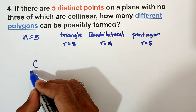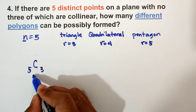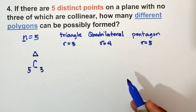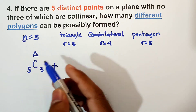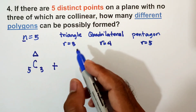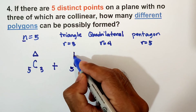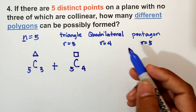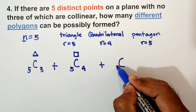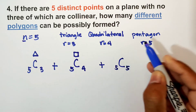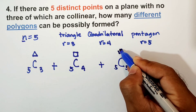Now let us solve. In this case, we add the combinations. Combination of five taken three for triangles, plus combination of five taken four for quadrilaterals, plus combination of five taken five for pentagons. For five taken three: three lines, start from five, four, three, multiply, and divide by three factorial.